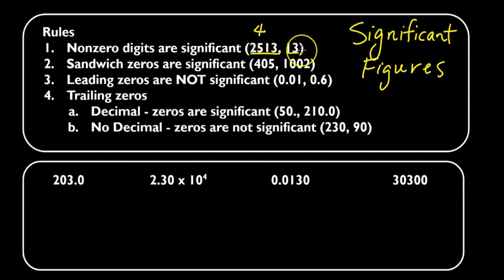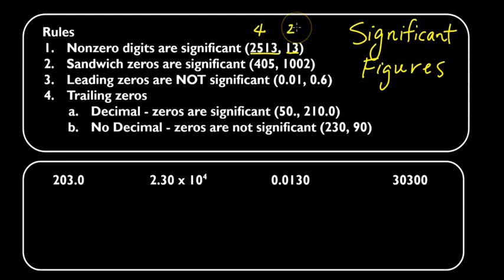13 — both digits are non-zero, so both digits are significant, so there are two significant figures there.